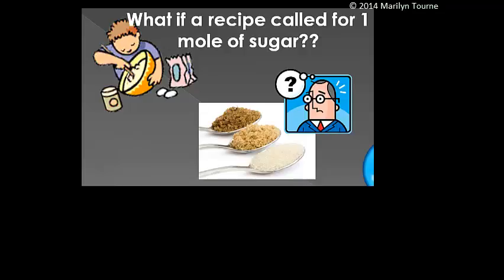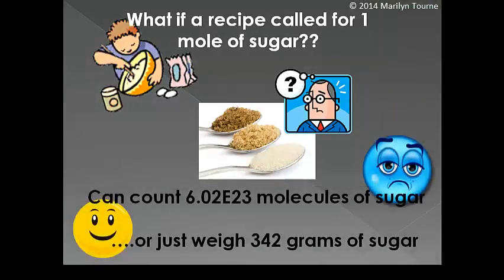Let's say a recipe called for one mole of sugar. What would you do? Would you actually sit there and count? Since we know a mole is equal to 6.02 times 10 to the 23rd molecules, would you count out that many molecules of sugar? See that little blue unhappy face? That would be me. I would be very unhappy if I had to count out that many molecules of sugar. Or would I just weigh out what sugar weighs?